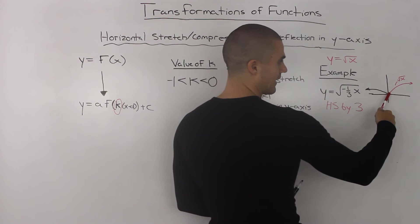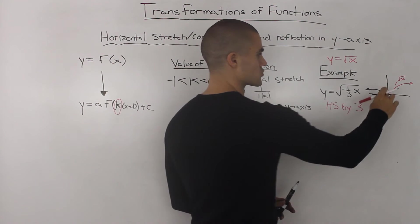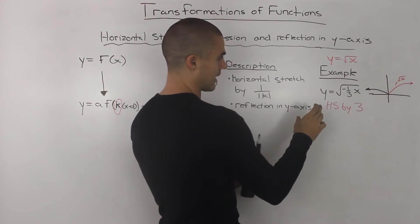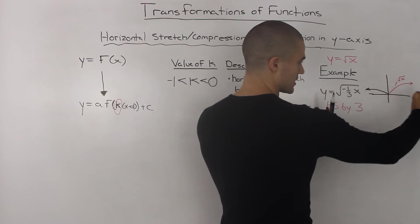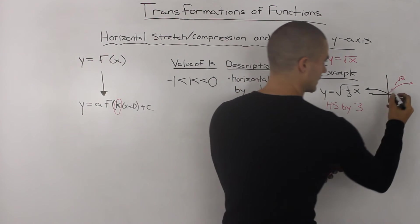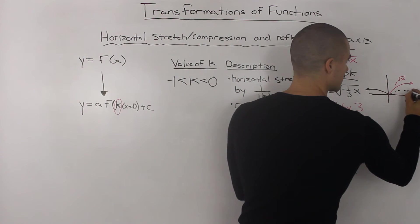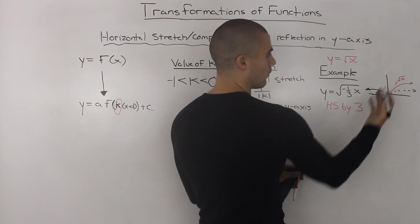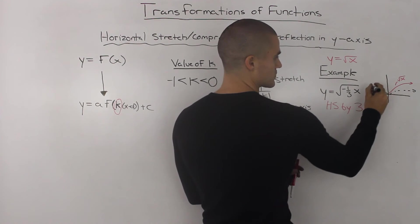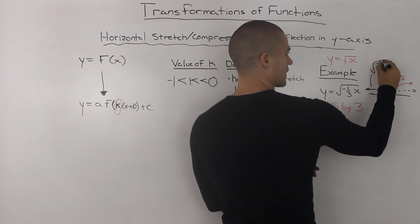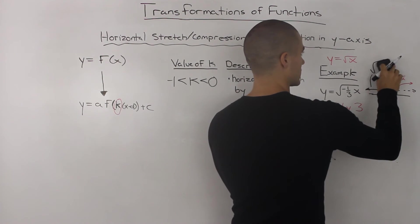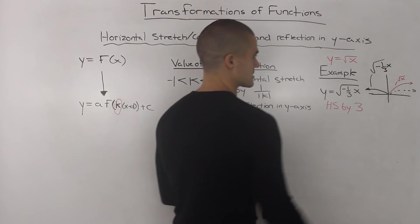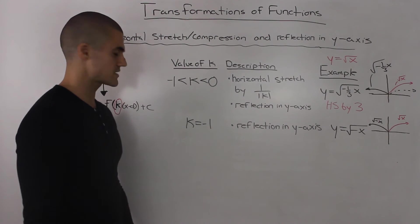Showing this graphically: starting from the base parent function, the square root of x in red, we first horizontally stretch it, then reflect it in the y-axis. The resulting function represents the square root of (−1/3)x.